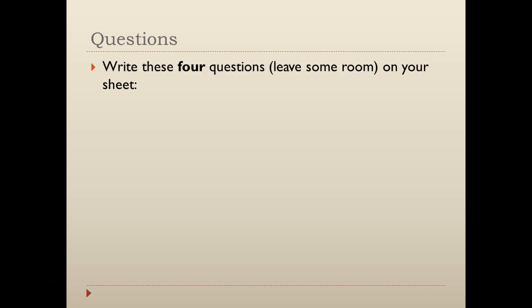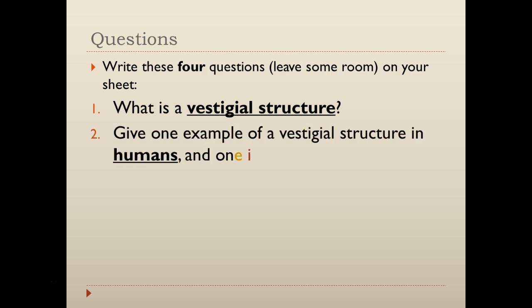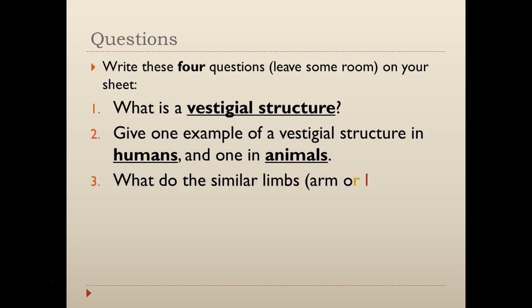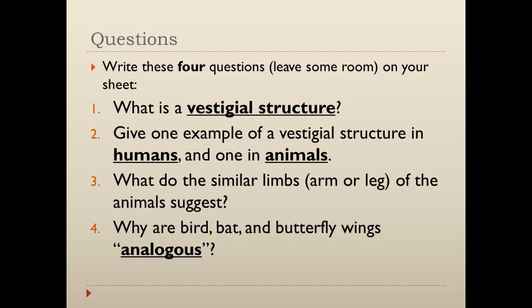Leave a little bit of room on your packet. Number one: what is a vestigial structure? Number two: give one example of a vestigial structure in humans and one in animals. Three: what do the similar limbs of animals suggest? And four: why are bird, bat, and butterfly wings considered to be analogous?